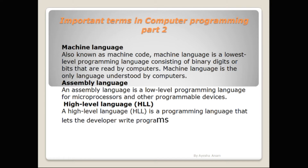The next term is high level language. High level language is a programming language that lets the programmer write programs. For example, C, C++, and Java — these are all high level languages.